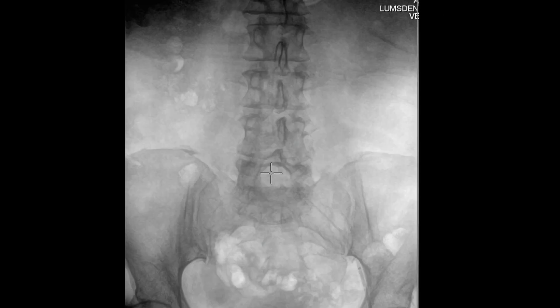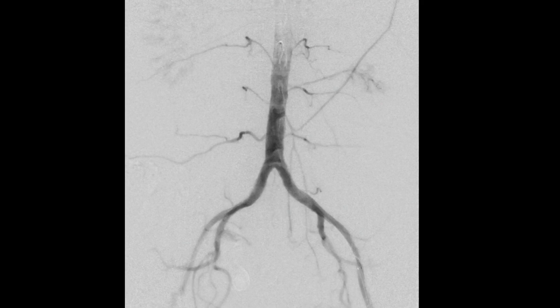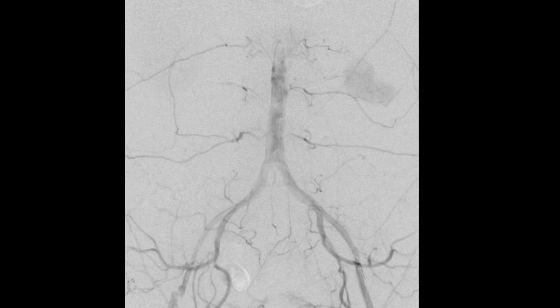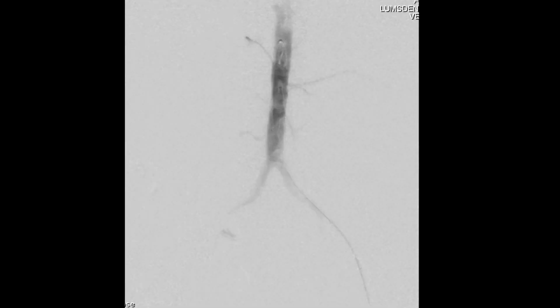We then proceeded with performing our abdominal aortogram and pelvic angiogram. This demonstrated a high-grade stenosis of the right external iliac artery just at the level of the pelvic brim, present at the distal segment of the external iliac artery.